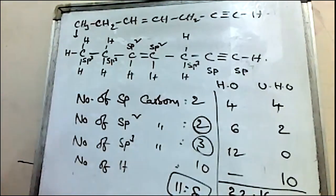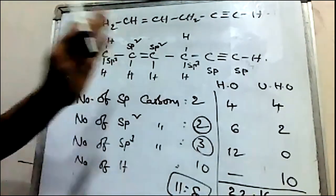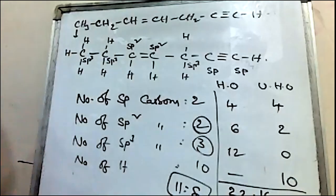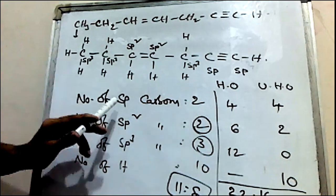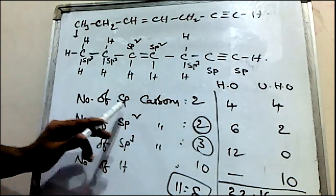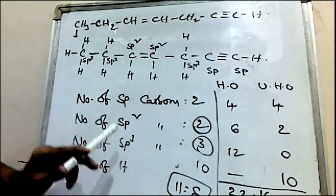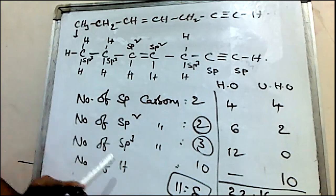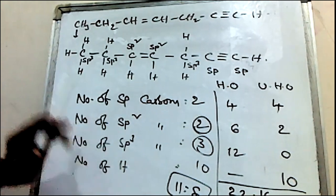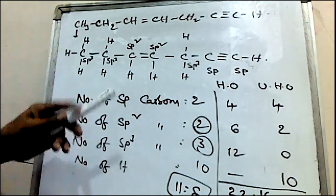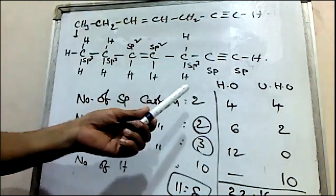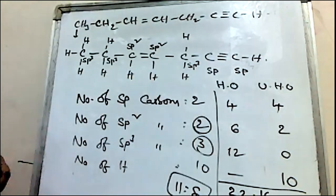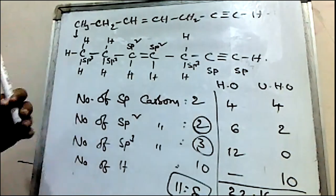So one hybrid and one unhybrid are considered. After this, for three carbons in the next part of the structure, the process continues similarly.